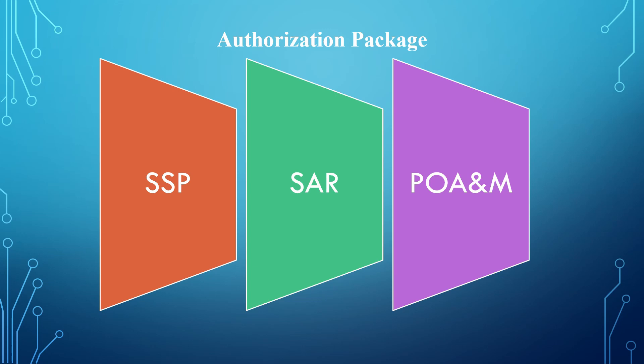The next document is the SAR, the security assessment report. The security assessment report is a document developed by the security control assessor for the purpose of briefing the authorizing official. It shows the current or present security posture of the application or the system, and this is a CA-2 or RA-3 control.